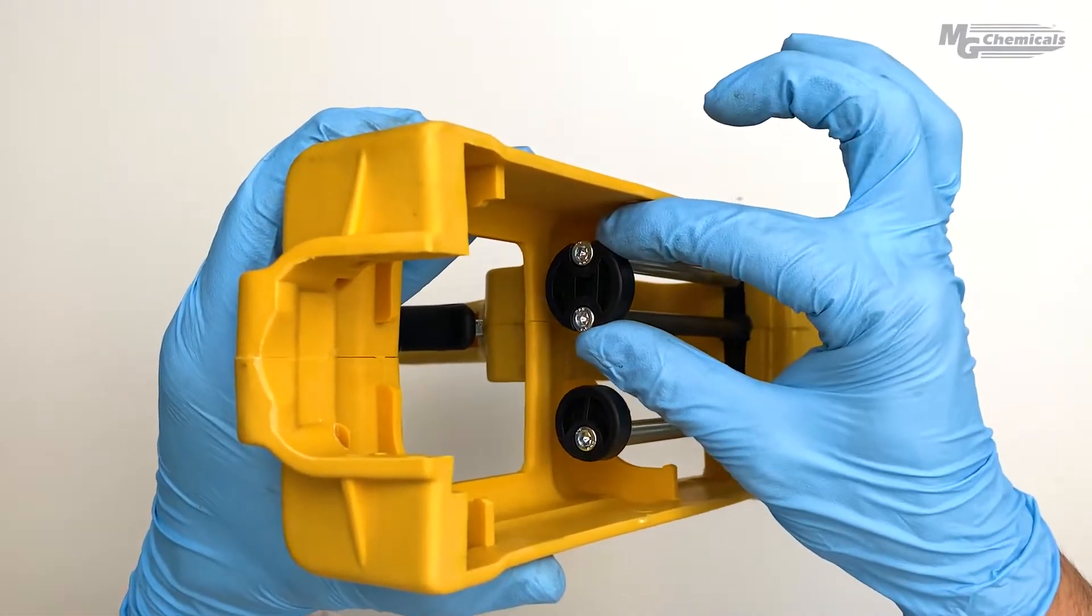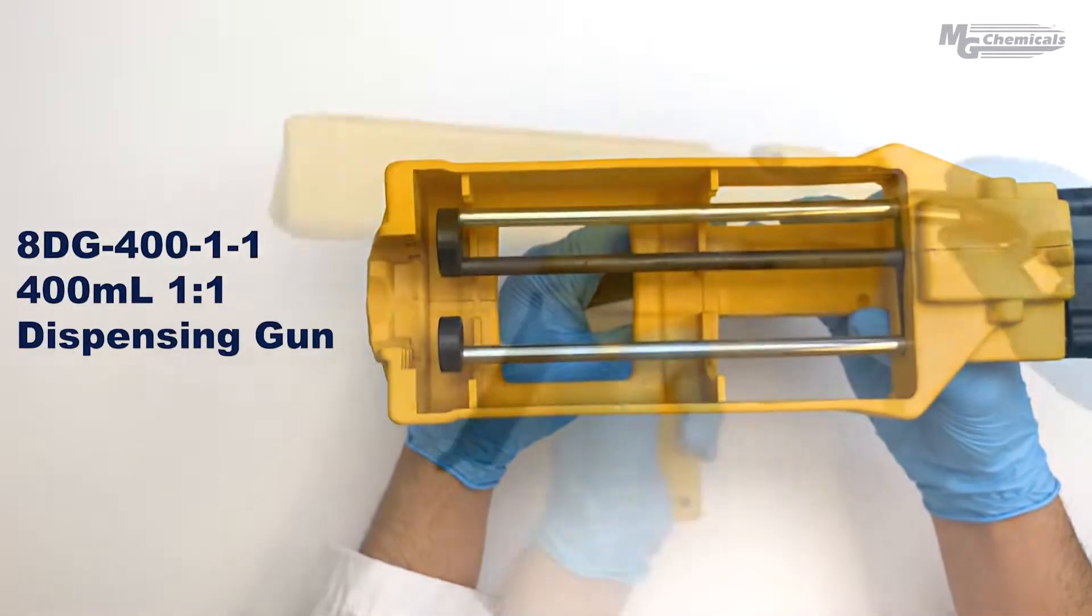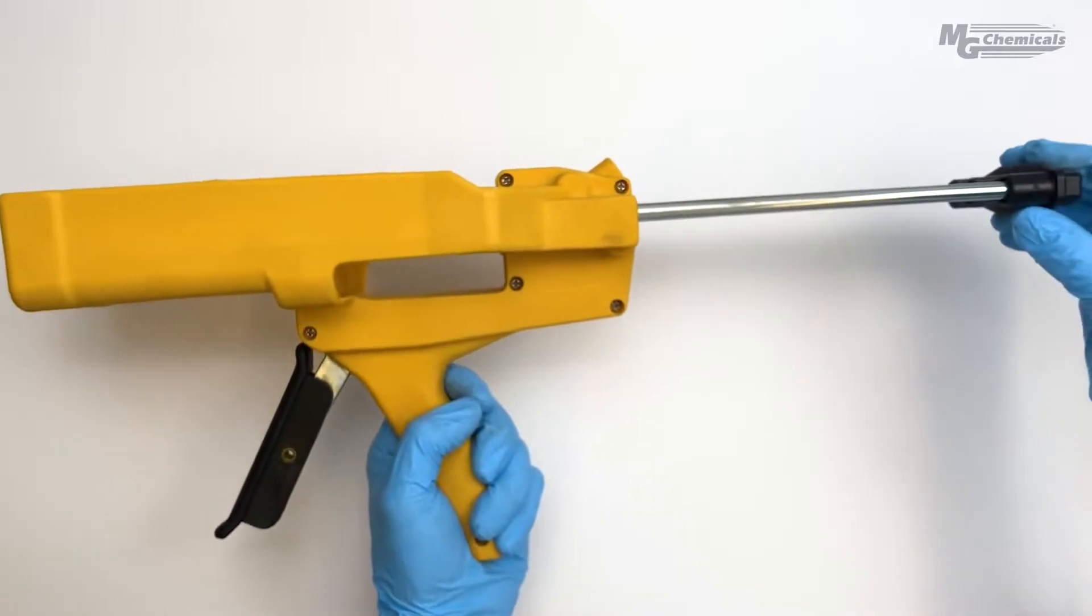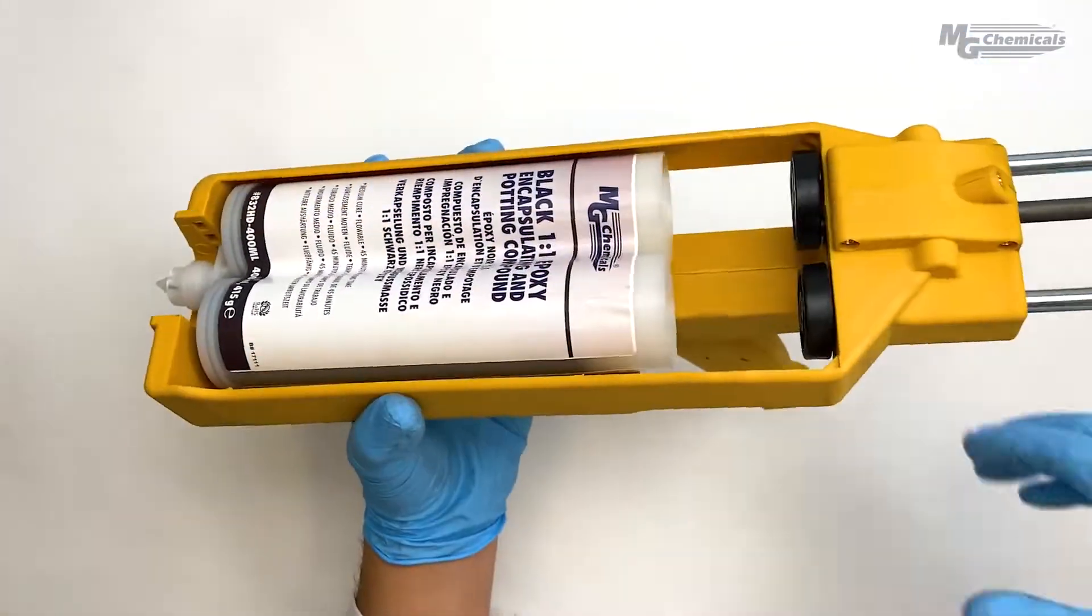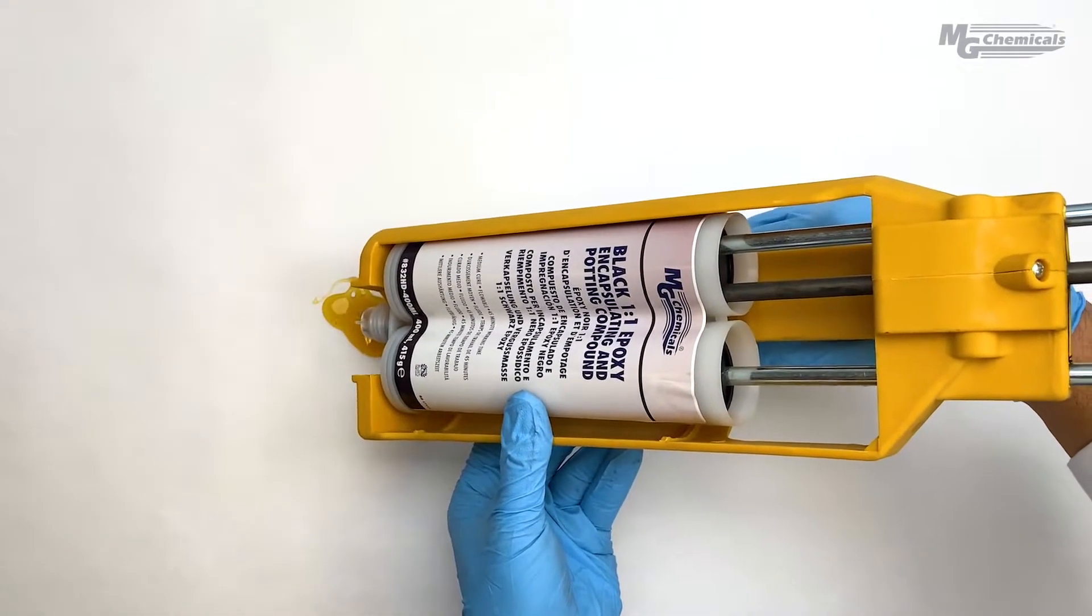8DG-400-1-1 is the dispensing gun for this cartridge system. To load, push the trigger forward and pull the pistons all the way back. Load the cartridge into the gun then push the piston snug into the back of the cartridge.